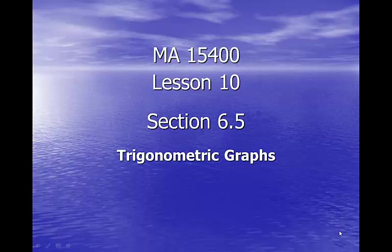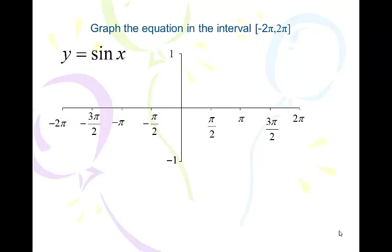Here we go with lesson 10, session 6.5, trigonometric graphs — we're going to be doing some graphing. We're going to start out with a couple simple ones: y equals sine x and y equals cosine x. The first one is y equals sine x; we're going to graph it between negative 2π and 2π. This graph goes in both directions forever, but we're going to look at a window between negative 2π and 2π.